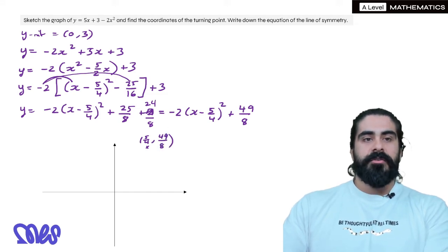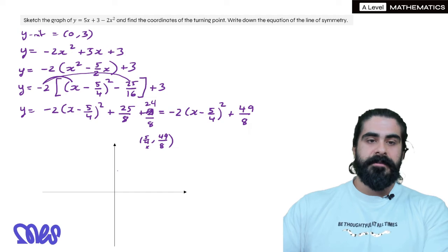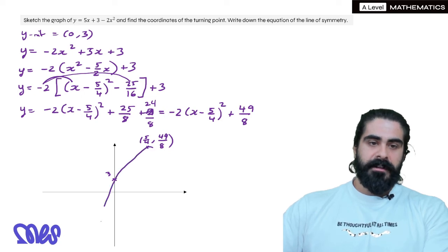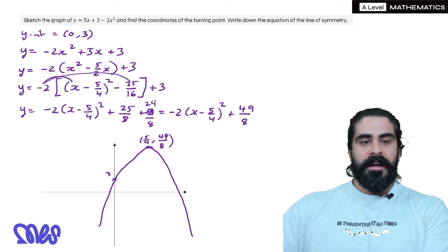And we also know it crosses the y-axis at 3, which would be something like here, maybe. So our graph, as best you can, will look something like this.